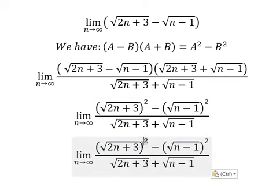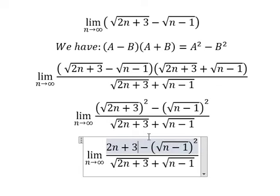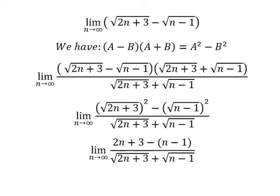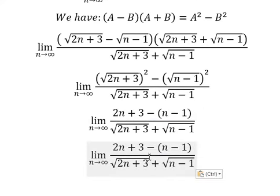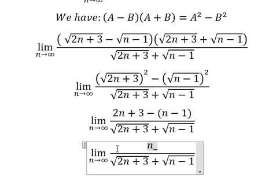So the first term gives us 2n plus 3, and the second gives us n minus 1. So 3 minus negative 1 gives us 4, and 2n minus n gives us n. That means the numerator is n plus 4.